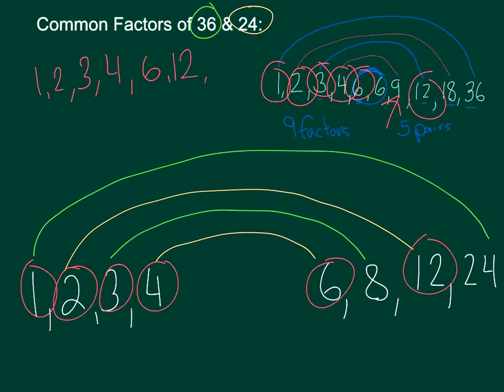24 is not because 24 is not a factor of 32 so here are my common factors. Sometimes they'll ask you for the greatest common factor. In this case the greatest common factor would be 12. That would be my GCF, greatest common factor.